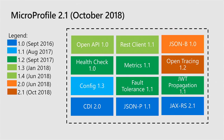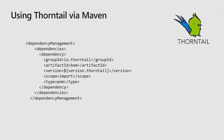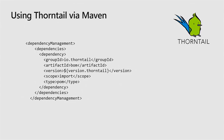OpenTracing is sort of the latest, coolest thing in MicroProfile. Thorntail itself is the idea of leveraging a bunch of Java EE expertise out there. It's an open standard. Everything works through POM XML - it's Maven-based, and 'maven-thorntail run' is the actual command you use to actually run things.